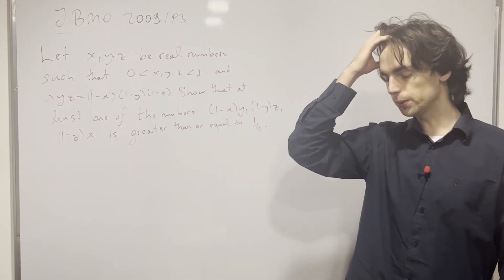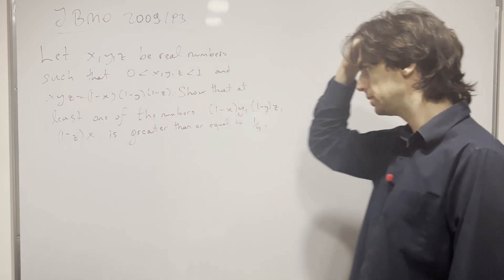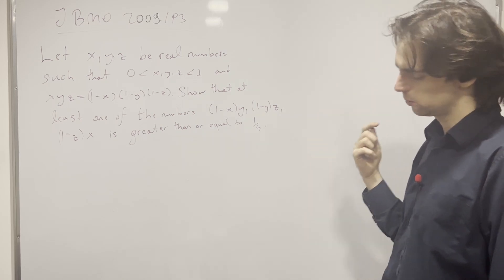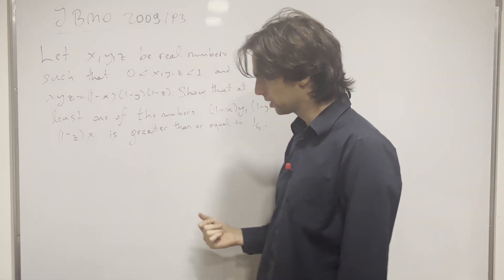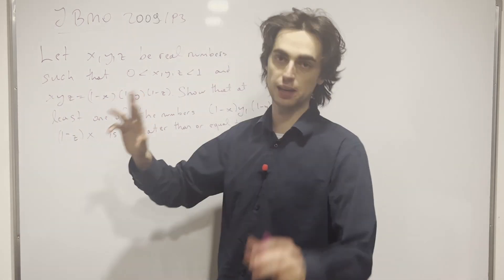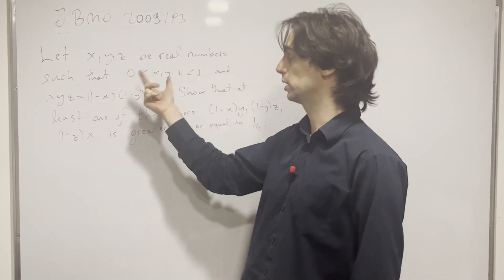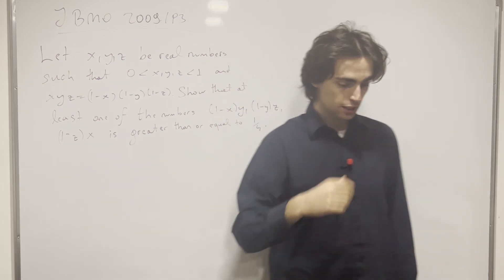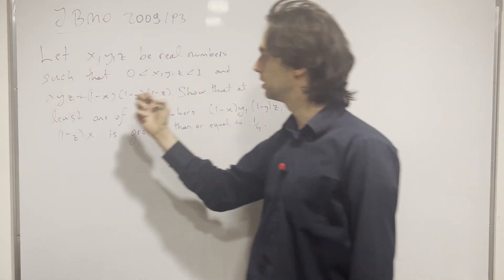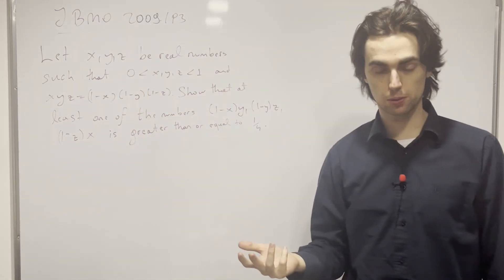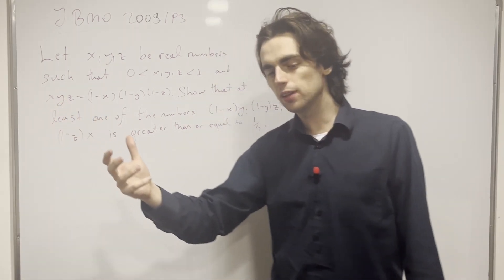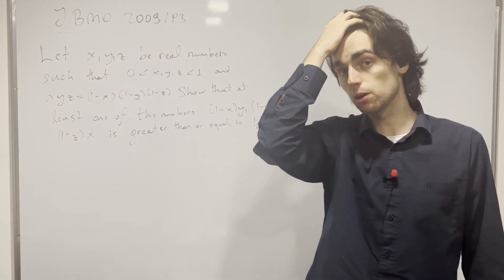Okay, so how are we going to do this? What does it mean for one of these numbers to be greater than or equal to a fourth? Well, if you think about it, if x is small, 1 over x is big. Small and big being used in this relative sense. If x is a fourth, then this number 1 minus x is 3 over 4. And then you need y times z to sort of catch up to the 3 over 4.